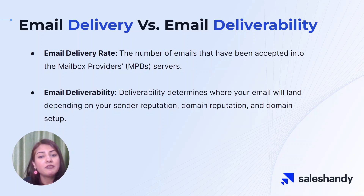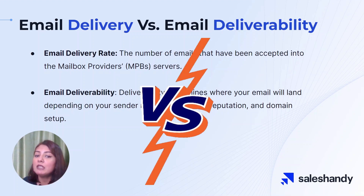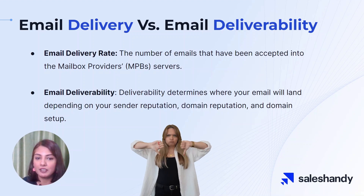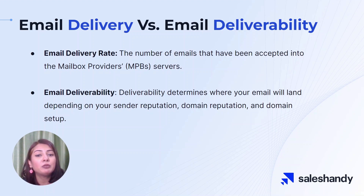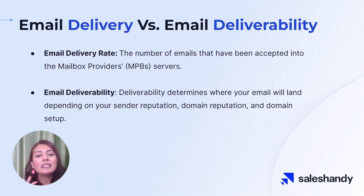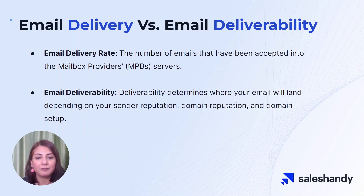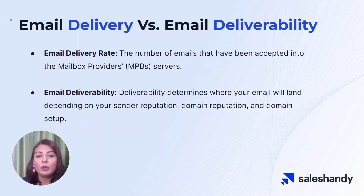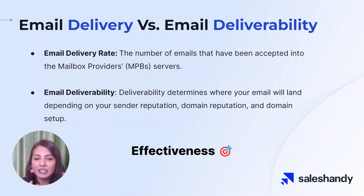Before moving ahead, let's understand the differences between email delivery rate and email deliverability. People often use these terms interchangeably, which is actually not correct. An email delivery rate is a measure of the number of emails that the mail provider's servers have accepted. On the other hand, email deliverability is slightly more complex — it's a measure of where your emails end up after the mail provider's servers have accepted them. This can be influenced by factors such as your sender's reputation, your domain reputation, and even the way your domain is set up. So your email delivery rate tells you how many emails have been accepted, while your email deliverability tells you where those emails actually end up.